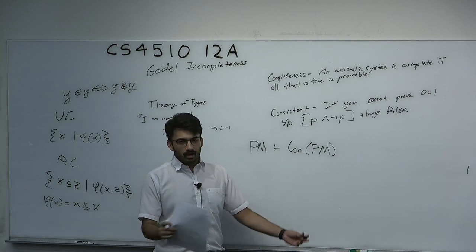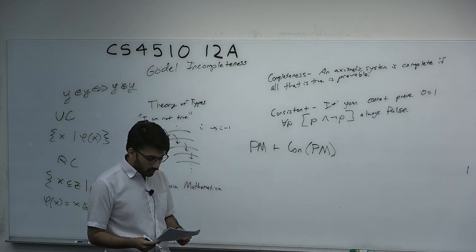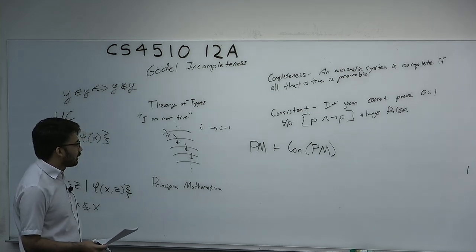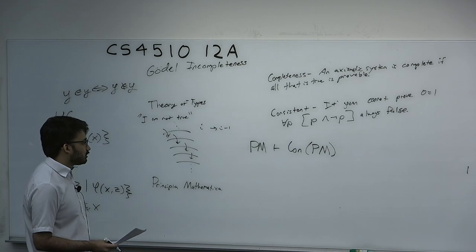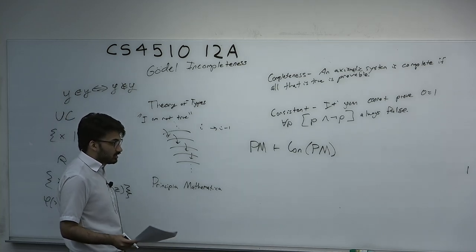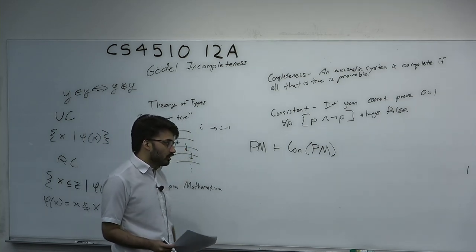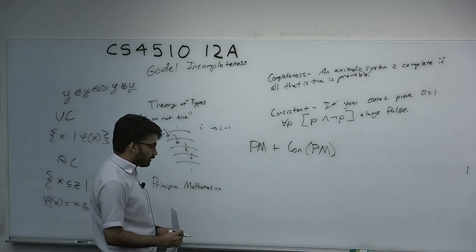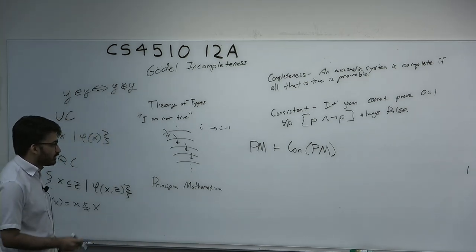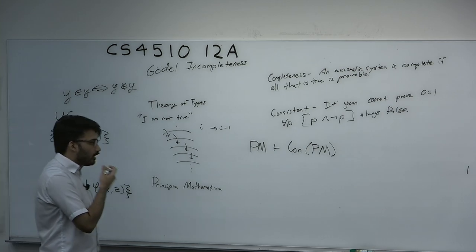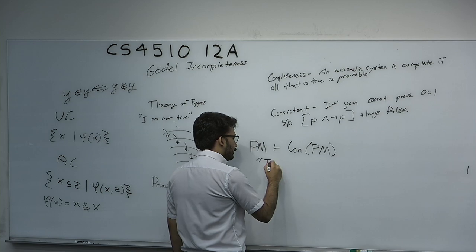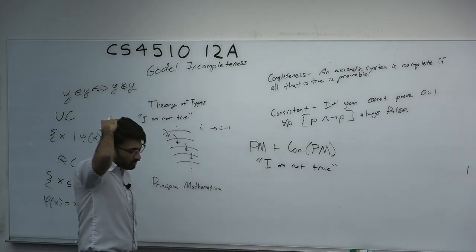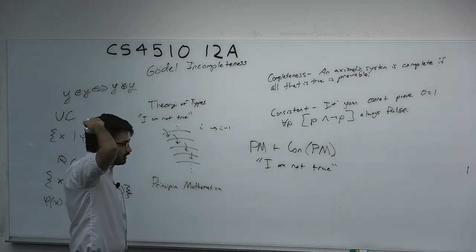This might look like: assume to the contrary you could prove 0 equals 1, and something bad happens. This is the opposite of what Russell was able to do to Frege — Russell showed there was an inconsistency in Frege's system — and Russell hoped his own system, which he spent 20 years on, was consistent. The self-referential issue seemed to be avoided using the theory of types; you could not encode a sentence like Russell's paradox.